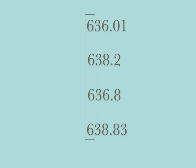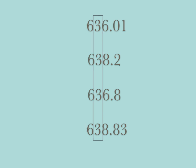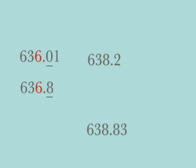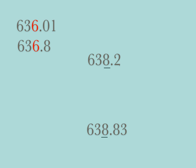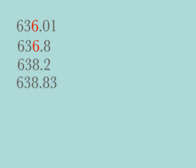Now we have a few more numbers, but we're going to evaluate them the same way. We look at the first digit — they're all sixes. We look at the next digit — they're all threes. Now look, we have our first difference. We have two sixes here. We need to take those two numbers and decide which one is least. Looking at the next digit after the six, we have a zero and we have an eight. Of course, zero is less than eight. Now back to our two remaining numbers — they both have an eight in the third place, so we go to the next digit. We have a two and an eight. Two is less than eight, so it will come before 638.83.